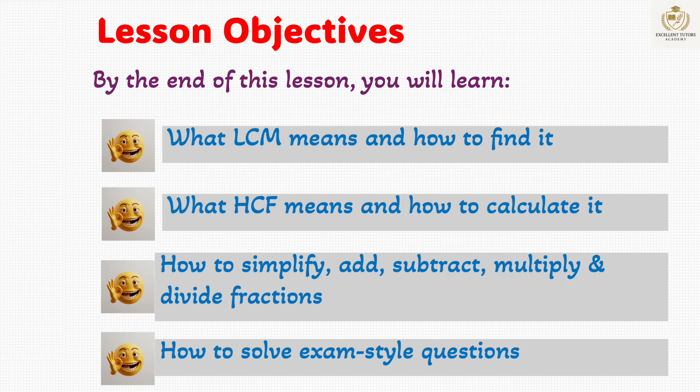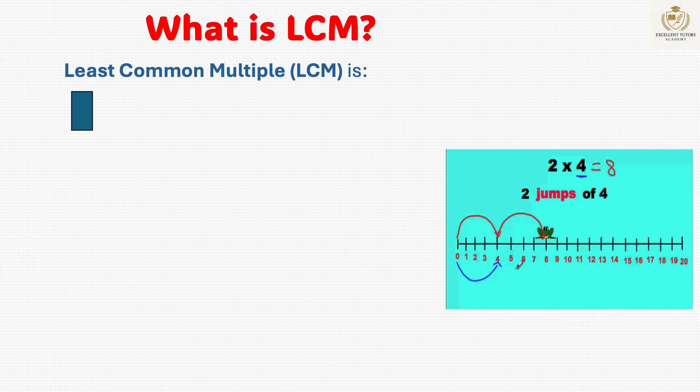Let's start with LCM. LCM stands for least common multiple. It is the smallest number that is a multiple of two or more numbers.